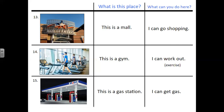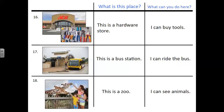Number thirteen. What is this place? This is a mall. What can you do here? I can go shopping. Number fourteen. What is this place? This is a gym. Number fifteen. What is this place? This is a gas station. What can you do here? I can get gas. Number sixteen. What is this place? This is a hardware store. What can you do here? I can buy tools.